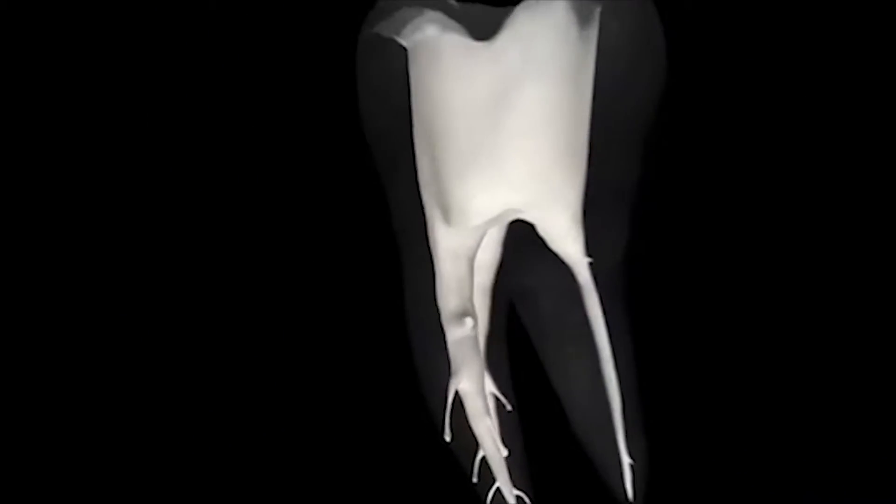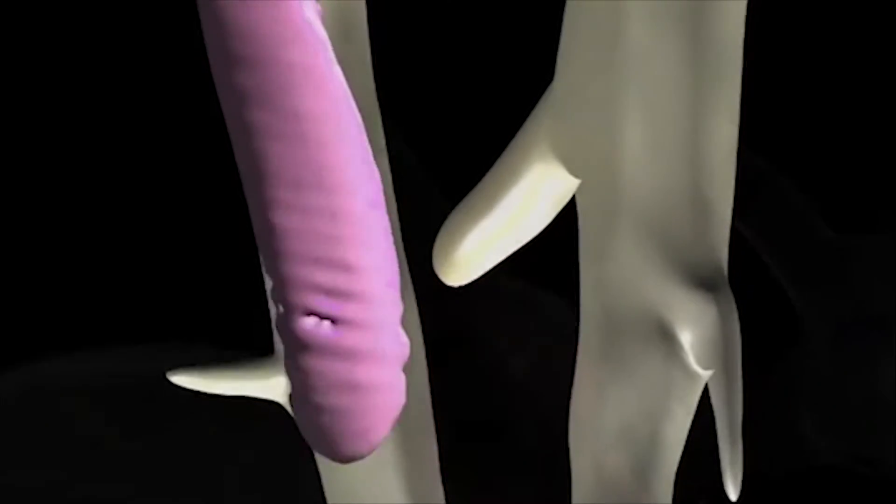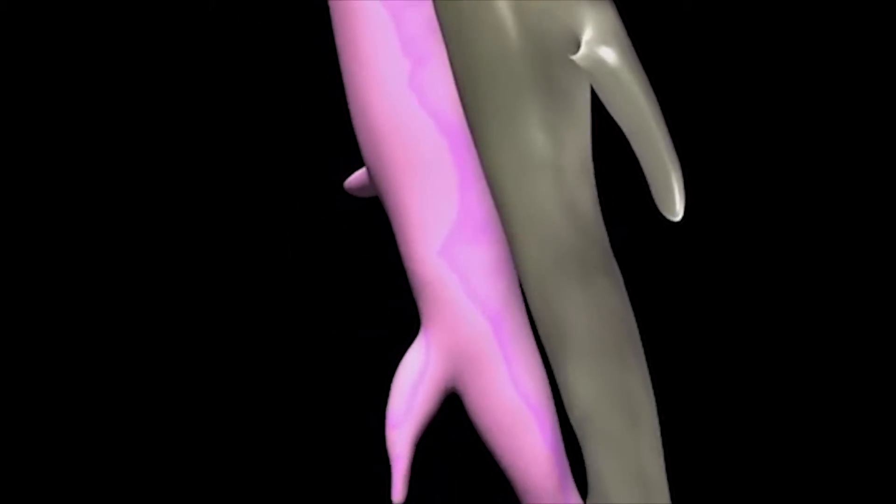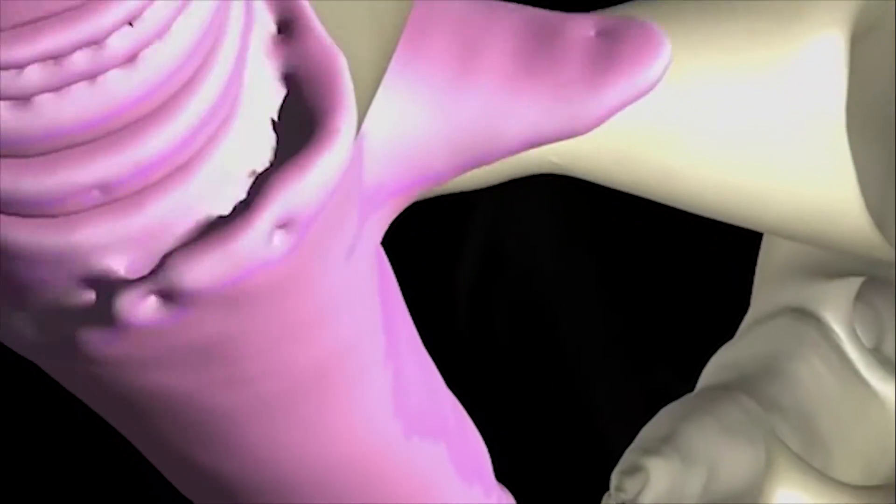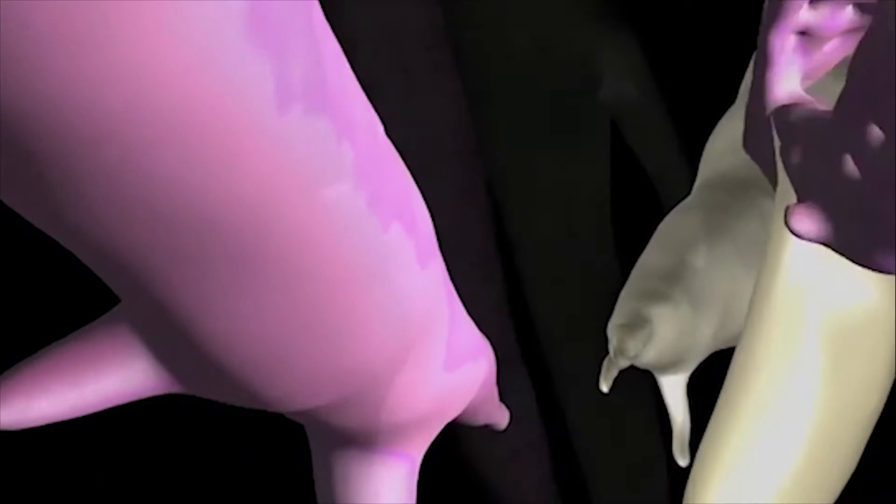Place GuttaCore into the root canal system in one smooth motion without excessive force. The cross-linked gutta-percha core centrally compacts the alpha-phase gutta-percha with a hydraulic force that sends it flowing in three dimensions into laterals, isthmuses, and accessory canals.